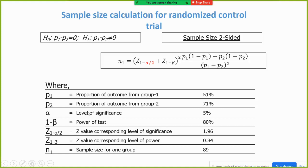Suppose from the literature review the prevalence of p1 is 51 percent, and the researcher's hypothesis, after giving the intervention, the proportion will be increased by 20 percentage points, that means at 71%. And alpha value is 5%, power is 80%.